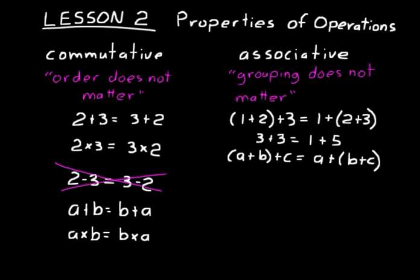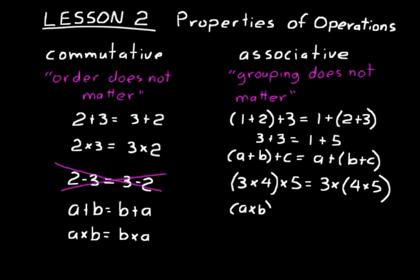Think of multiplication — same idea. (Three times four) times five is equal to three times (four times five). On the left, working inside the parentheses first: 12 times five is 60. On the right: three times 20 is 60. The way we group those factors does not matter. More generally: (A times B) times C is equal to A times (B times C). That's the associative property of multiplication.